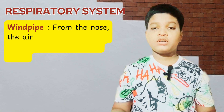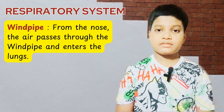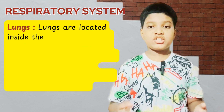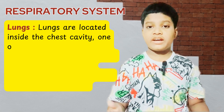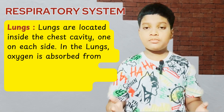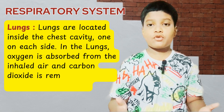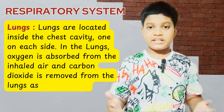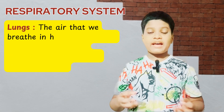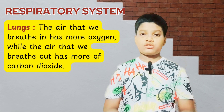Windpipe: from the nose, the air passes through the windpipe and enters the lungs. Lungs are located inside the chest cavity, one on each side. Oxygen is absorbed from inhaled air and carbon dioxide is removed from the lungs during exhalation. The air that we breathe in has more oxygen, while the air that we breathe out has more carbon dioxide.